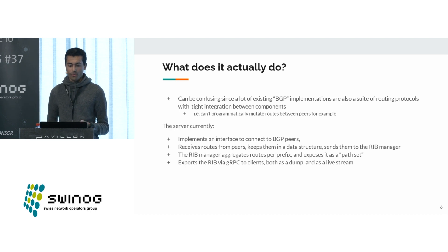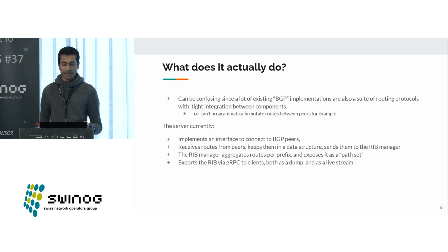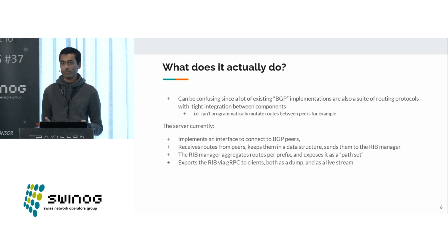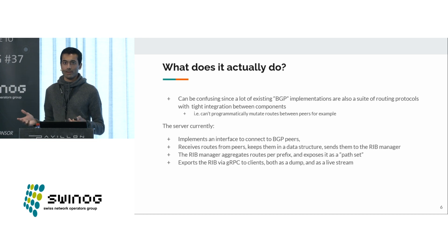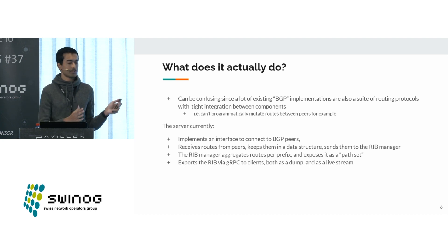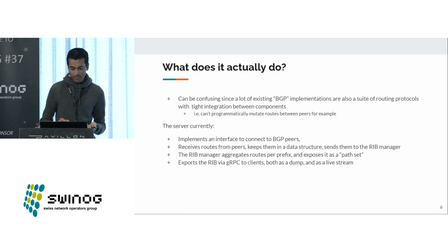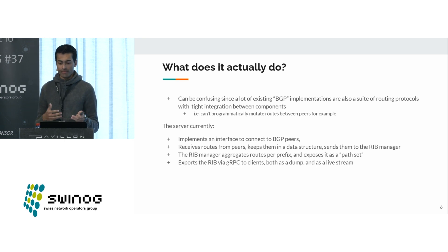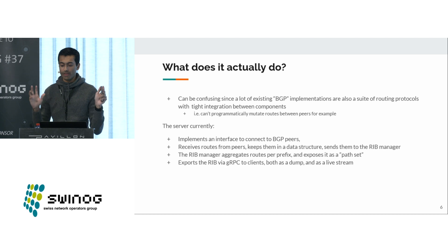So right now, what does the implementation actually do? It can be confusing because a lot of BGP implementations do much more than just BGP — things like OSPF, synchronizing the Linux data plane, IP addresses, and pulling that into their view of the world. I just wanted the thing that announces some routes, takes routes in from peers, and does something with it. My implementation is really just focusing on BGP and exposing those routes. It can connect to BGP peers, receives routes from those peers and stores them in the data structure for that peer, and then centralizes all the routes from all the peers into the RIB manager — the routing information base — which has the view of all peers and what's reachable.